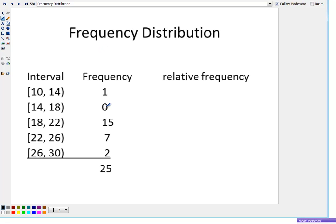So as you can see, I have one person that traveled out the country and they were between the ages of 10 and 14. Let's say they were 13 years old so they fell within that interval. I didn't have anybody who traveled out of the country between the ages of 14 and 18. I had about 15 people who traveled out of the country between the ages of 18 and 22, and so on.